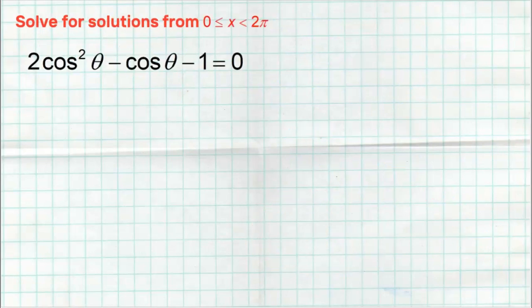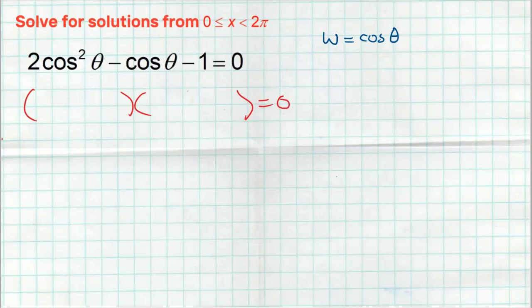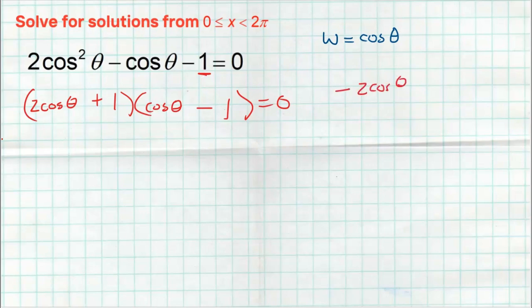Here's another one, very similar. If you want to use the w method, let w equal cosine of theta — that's totally fine. But some students can visually see it and factor without that substitution. They break apart the two cosines theta into cosine of theta times cosine of theta, break apart the one into one times one. Make this negative and this positive — outside gives negative two cosine theta, inside gives positive one cosine theta, combining to give the negative cosine in the middle. So factoring gives: cosine of theta plus one equals zero, or cosine of theta minus one equals zero.